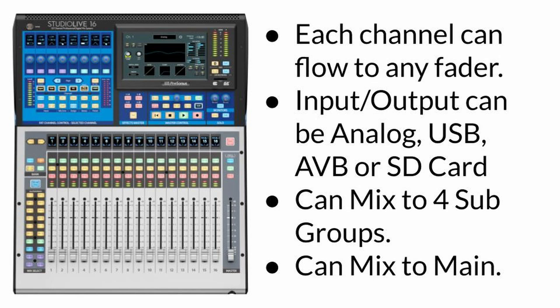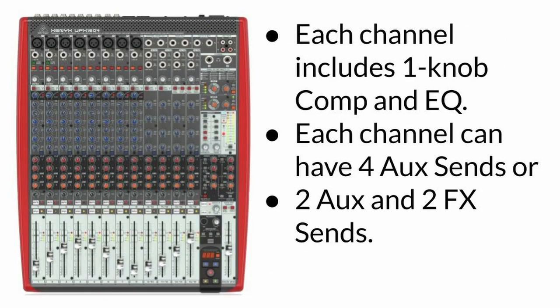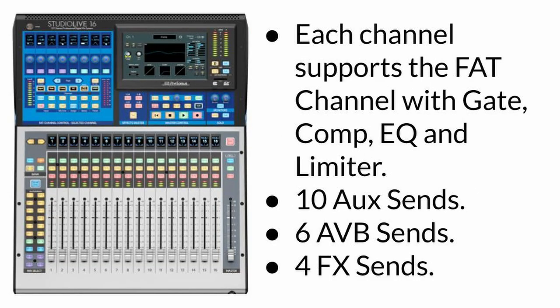This way, you can bus certain channels into subgroups before sending to the main mix, and on that bus you can have a compressor — like on a drum bus or a vocal bus. With the Xenix UFX 16-04, each channel includes a one-knob compression and an EQ section, and each channel can have up to four auxiliary sends or two auxiliary and two FX sends. With the StudioLive 16, each channel supports the FAT channel, which includes gate, compression, EQ, and a limiter, plus up to ten auxiliary sends, six AVB network audio sends, and four FX sends.